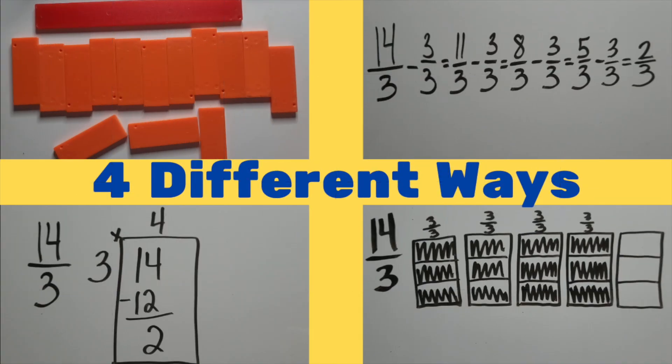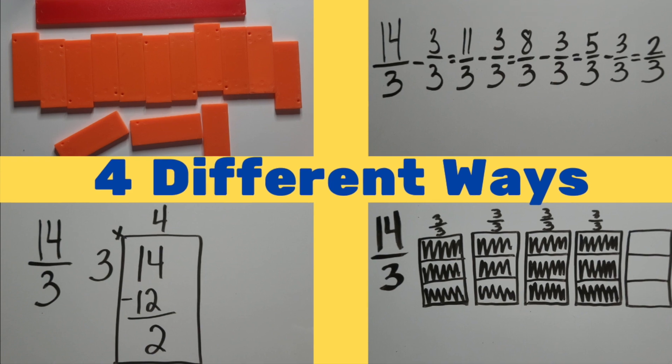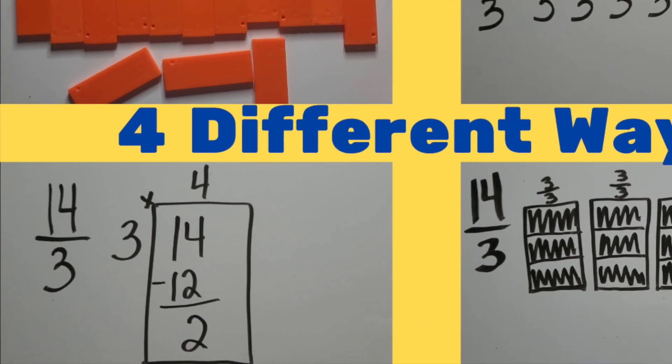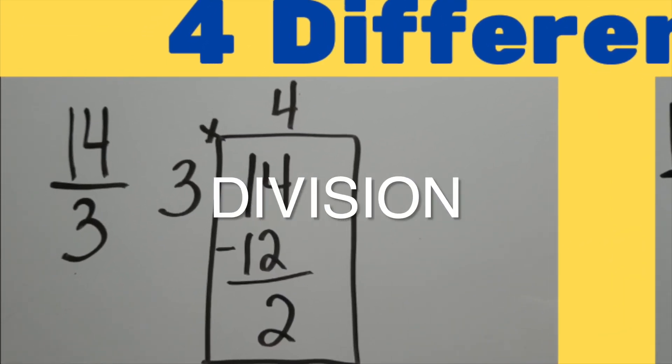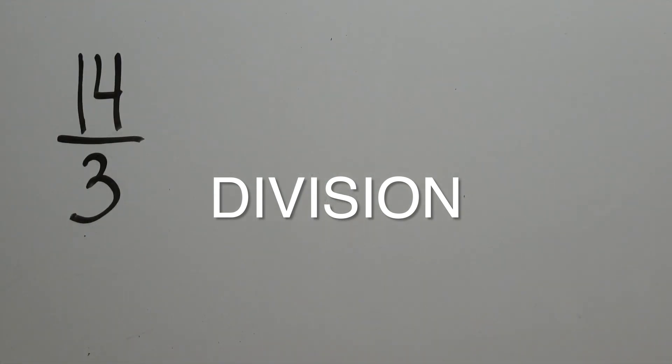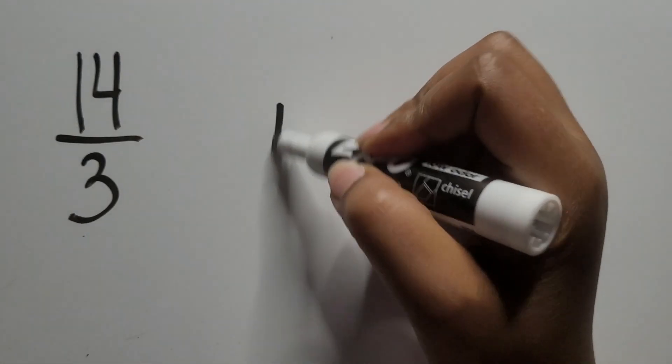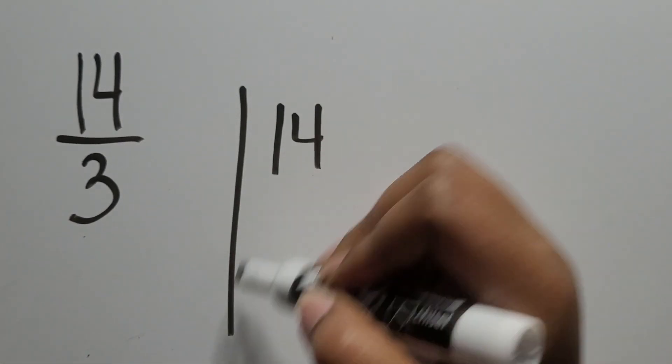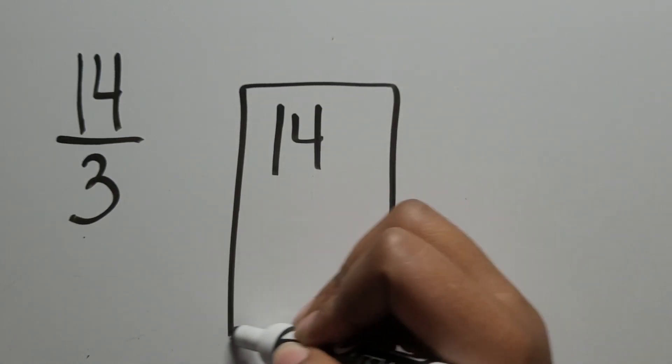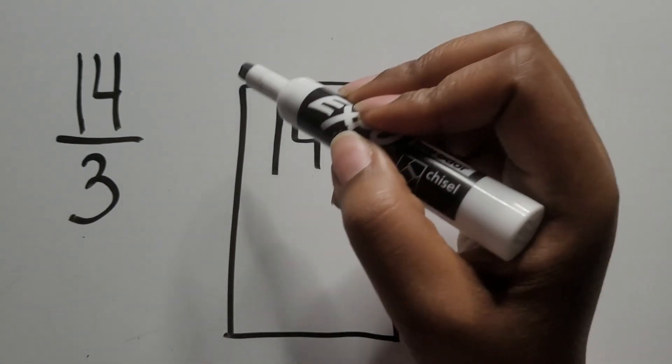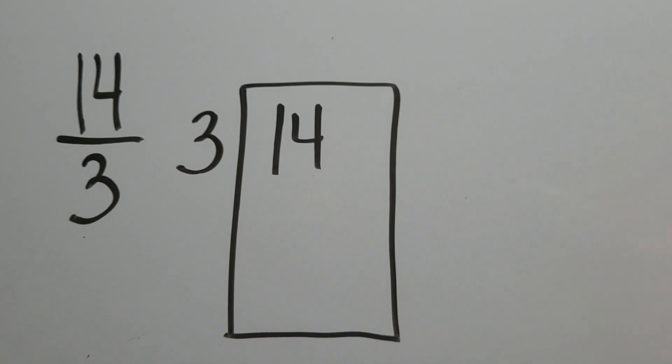In the fourth way of showing how to convert fractions greater than one to a mixed number, we'll use division. When using division, choose the division strategy that you or your students are most comfortable with. In this example, we're using partial quotient, which can look very similar to long division. Just ensure that students understand that we're dividing 14 by 3 or the numerator by the denominator.